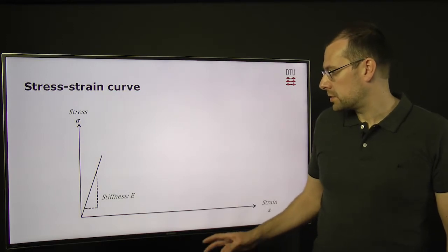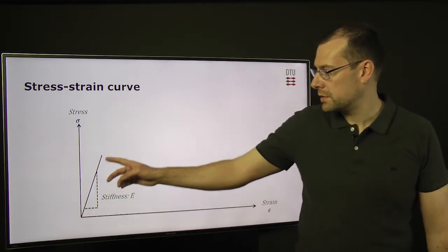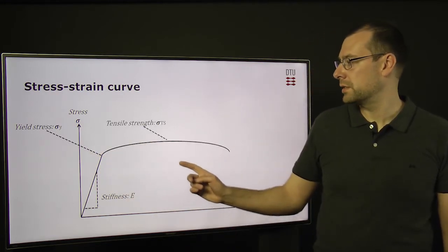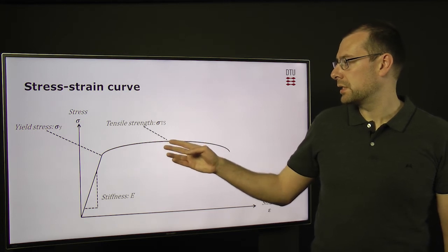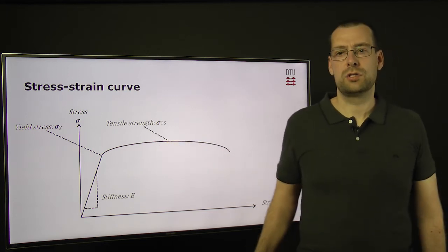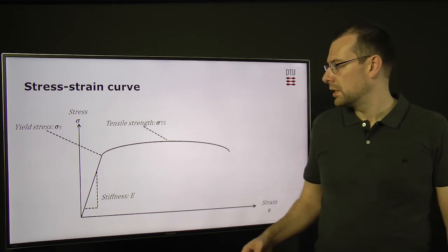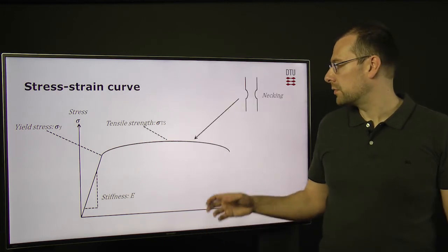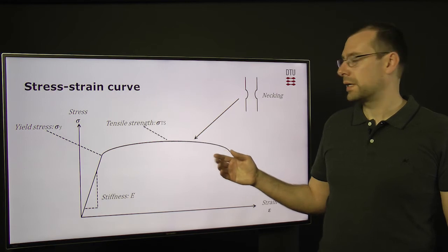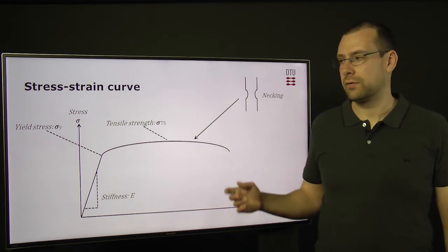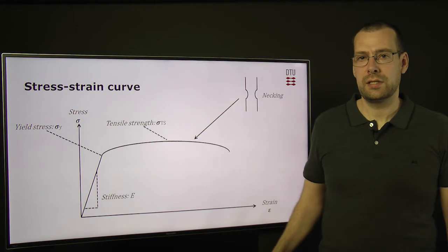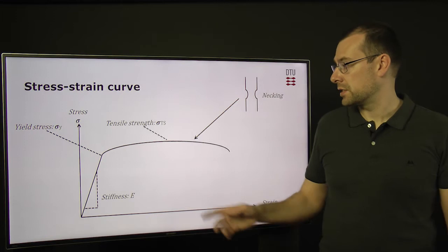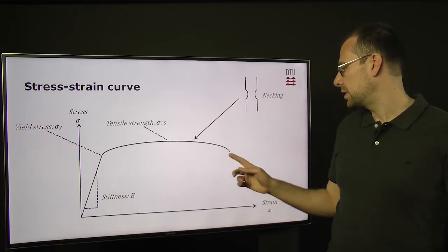So looking at the stress-strain curve again, we started out with the stiffness, the slope of the curve here. Then we get the yield stress point, where we go to plastic deformation. And at the top of the curve, we have the tensile strength. And this is basically the ultimate strength of the material. And we can see here that the slope goes down again. And this is because for most metals, we can get some local deformation in the metallic rod here. And since our engineering stress was based on the original cross-sectional area, then the stress will drop. So finally here, we get a fracture.